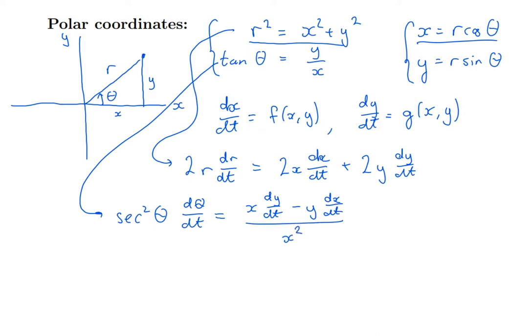I really want d theta/dt. That tells me d theta/dt. Divide through by sec squared. Well, remember that sec theta is 1 over cos theta. So I'm going to get cos squared theta over x squared times x dy/dt minus y dx/dt.